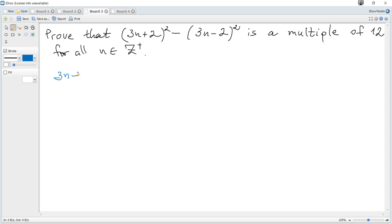So (3n+2)² minus (3n-2)² becomes, applying the formula (a+b)² = a² + 2ab + b², it becomes 9n² + 2 times 2 times 3, so it's 12n plus 2 squared plus 4.